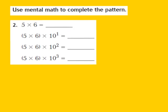Now let's take a look at question number 2 together. Our job is to use mental math to complete the pattern. For question number 2, they give us 5 times 6. I know that 5 times 6 is going to give me 30, so I'm going to write down 30 as the product. This 5 times 6 equals 30 becomes my basic fact, so I'm going to make a little note of that right next to my 30.